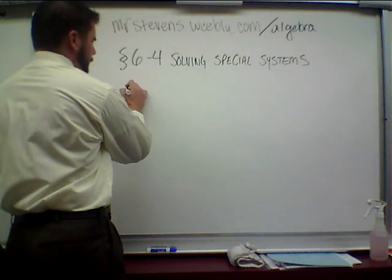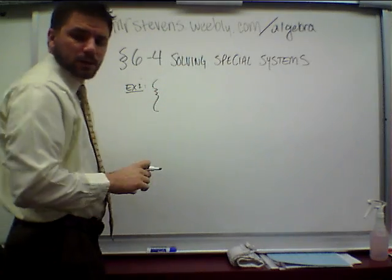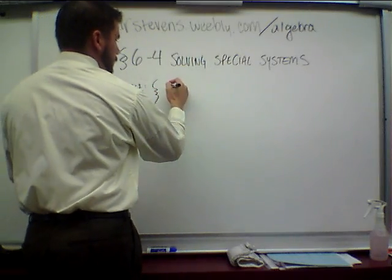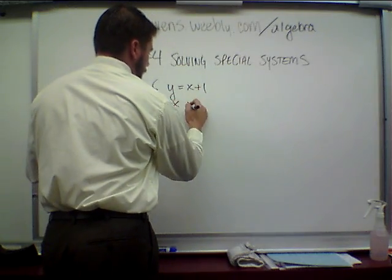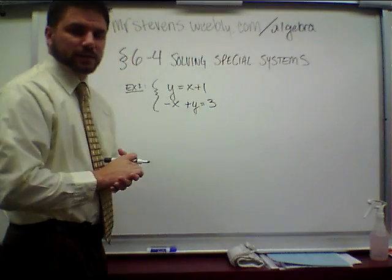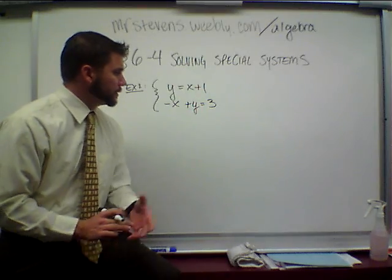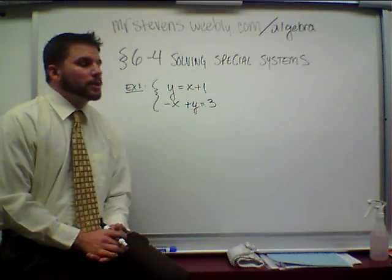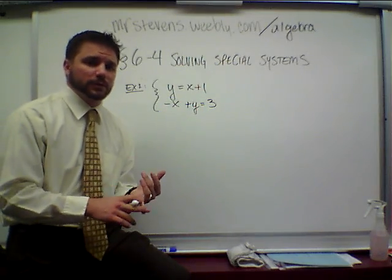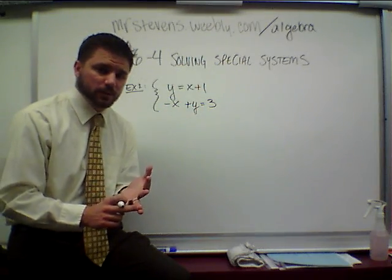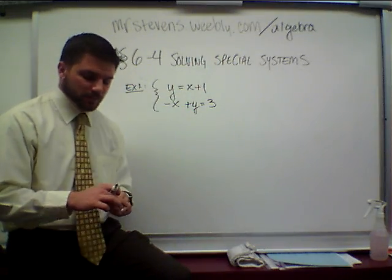The first example we'll do is y equals x plus 1 and negative x plus y equals 3. It doesn't look like a very difficult problem. The hard part is going to be what we do when we get to our answer. We need to figure out the easiest way to solve this problem. Looking at this problem, I already have one of my variables isolated, so I'm going to go ahead and use the substitution method.